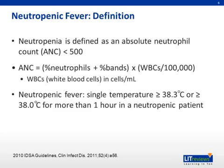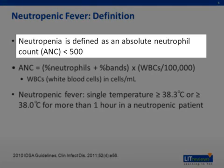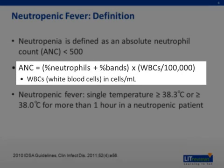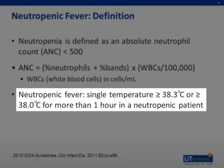The definition of neutropenic fever begins with the definition of neutropenia. This is defined as an absolute neutrophil count, or ANC, of less than 500. Neutropenic fever is a single temperature of greater than or equal to 38.3 degrees Celsius, which is 101 degrees Fahrenheit, or a sustained temperature of 38.0 degrees Celsius for more than one hour in a patient with neutropenia.